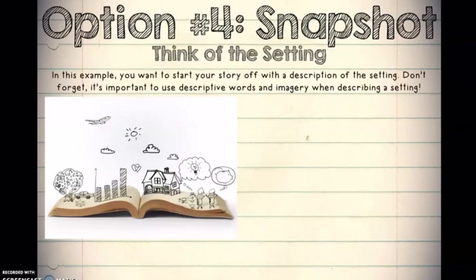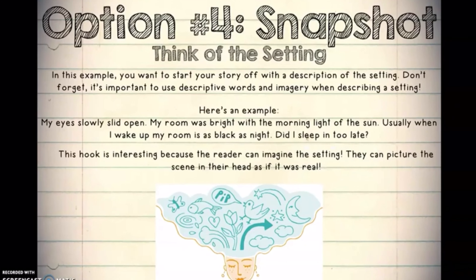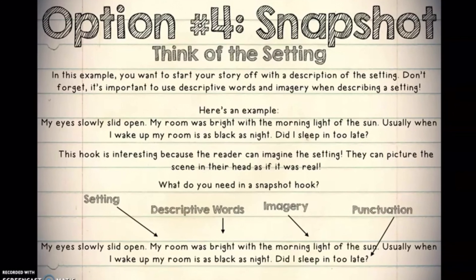The fourth option for your hook is to be as descriptive as you can, giving us a snapshot of the environment or the setting of the story that you're writing about — so descriptive that we feel like we're in your shoes watching it as it's happening. Here's an example: 'My eyes slowly slid open. My room was bright with the morning light of the sun. Usually when I wake up, my room is black as night. Did I sleep in too late?' Notice that you're relating the scene to something everyone can picture. Try to be as descriptive as you can.